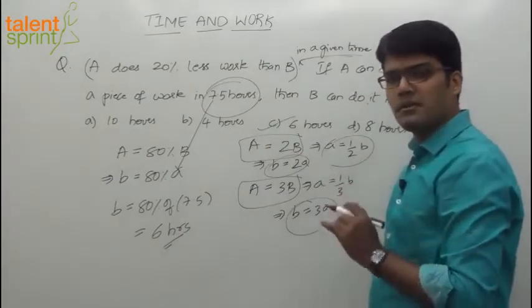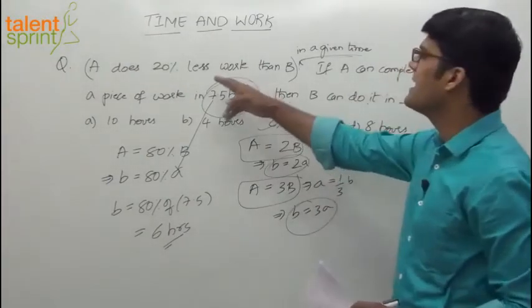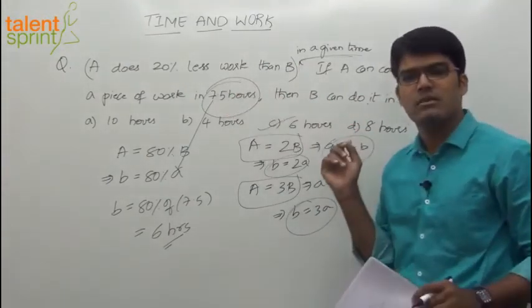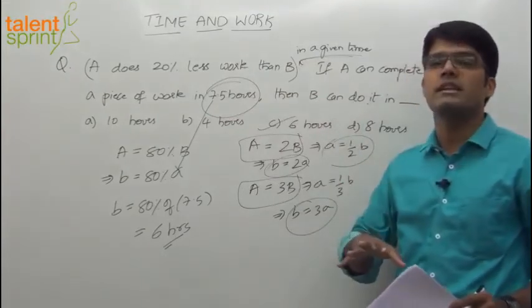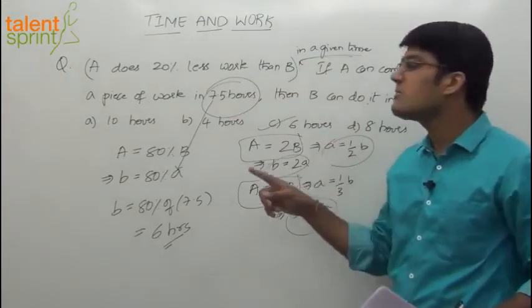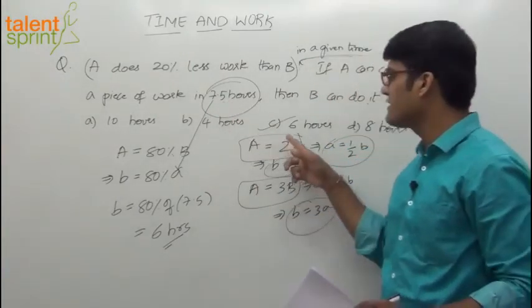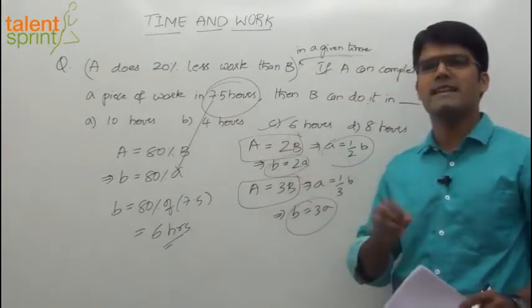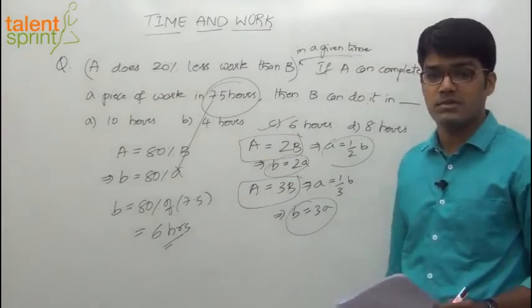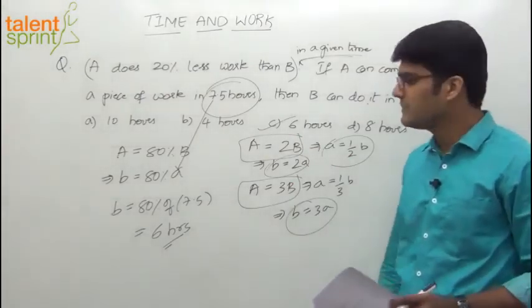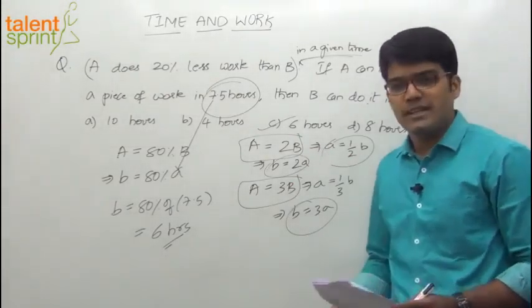So nothing to be done on paper. If you are smart enough you will understand that if A does 20% less work than B, A's capacity is only 80% of B's capacity, which means B's time is 80% of A's time. 80% of 7.5 is 6 hours. So within 5 to 8 seconds you should be able to mark the answer for this question without putting pen on paper. So that's about it. Let's look at the next question.